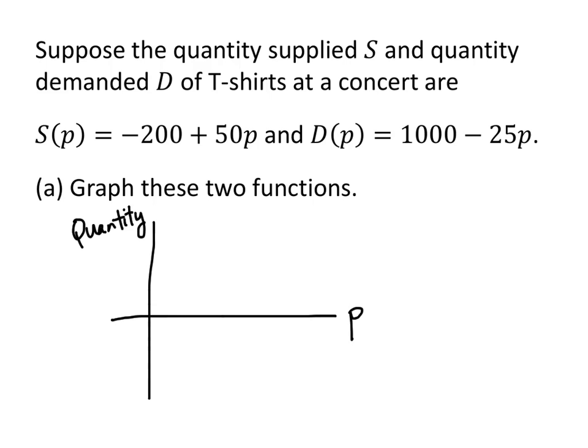Okay, so let's start with our supply function. Our supply function is negative 200 plus 50p. So let's start with a negative 200. Remember that that's our y-intercept. So that means that this supply function crosses the y-axis down here at negative 200. So at the point (0, -200), that's one point that I know for sure is on the graph of my supply function.